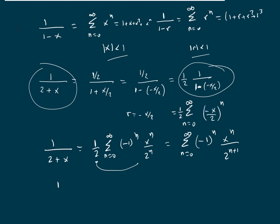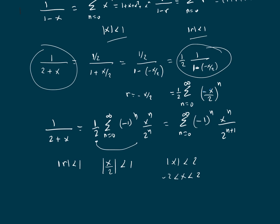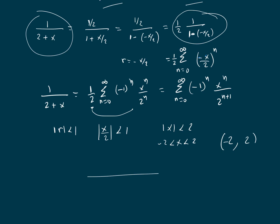This series converges when |r| < 1, meaning |x/2| < 1, or |x| < 2. So x must be between -2 and 2. The interval of convergence is (-2, 2), open at both endpoints since the geometric series diverges at x = 2 and x = -2.